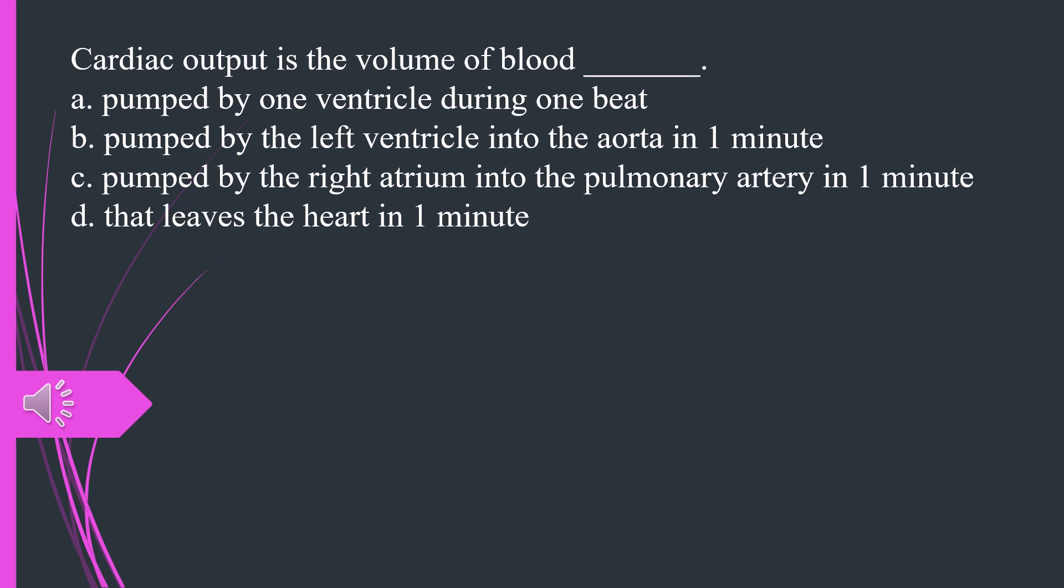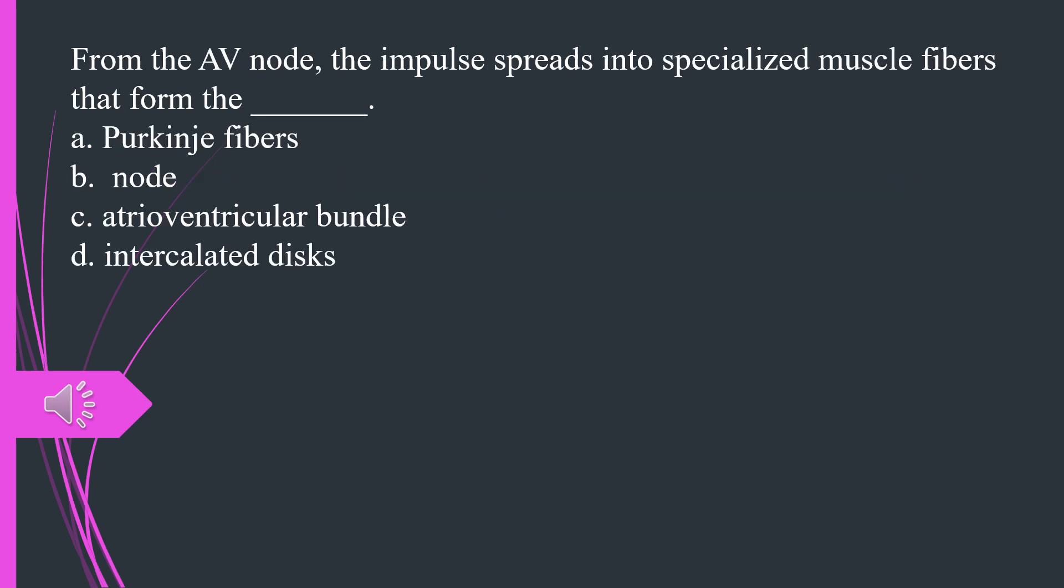Cardiac output is the volume of blood A. Pumped by one ventricle during one beat B. Pumped by the left ventricle into the aorta in one minute C. Pumped by the right atrium into the pulmonary artery in one minute D. That leaves the heart in one minute. The answer is B, pumped by the left ventricle into the aorta in one minute.